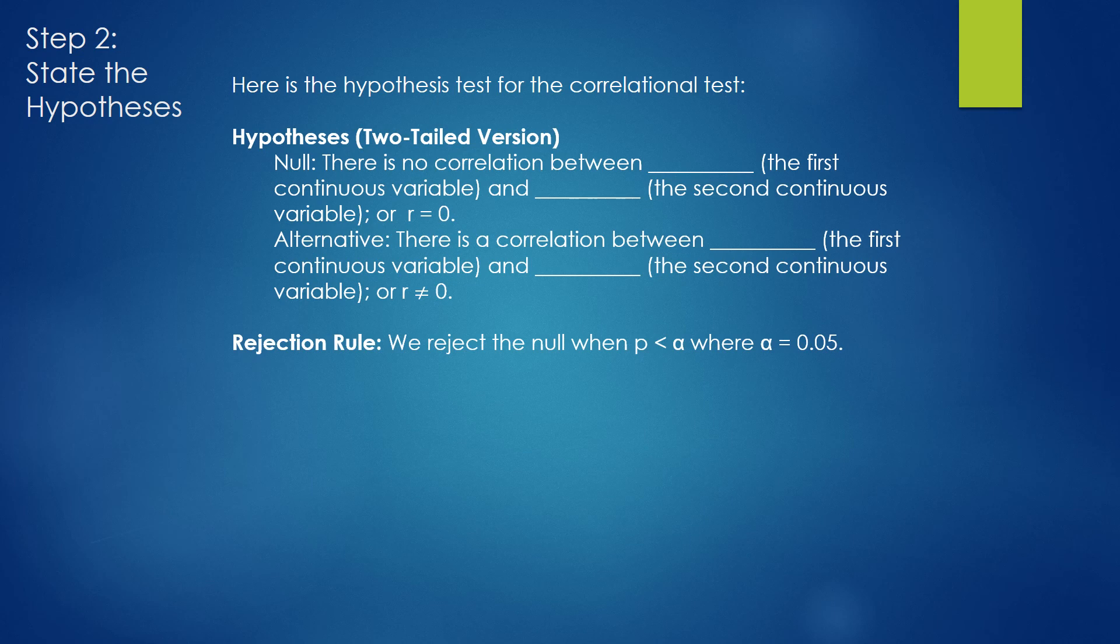Our rejection rule is the same as always. We reject the null hypothesis when p is less than alpha, where alpha equals 0.05. If p is greater than alpha, we fail to reject the null hypothesis.